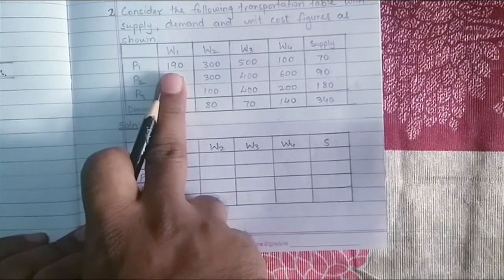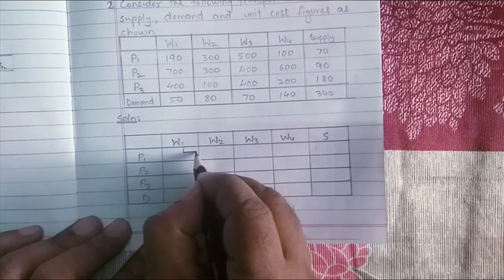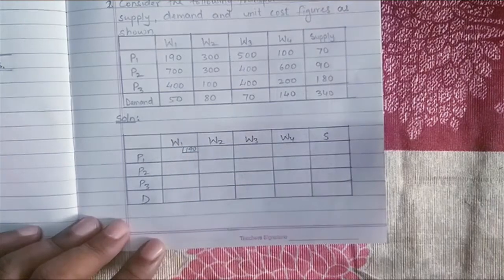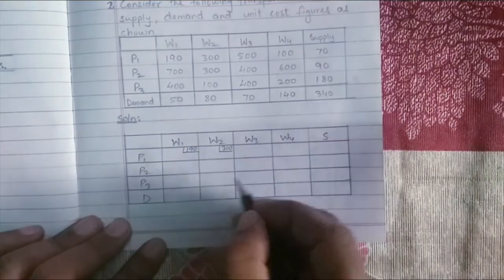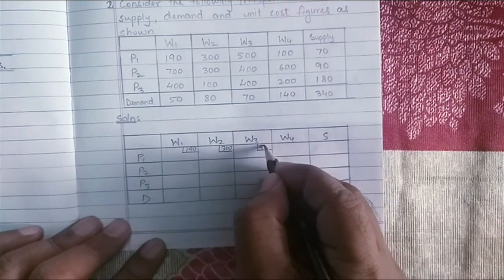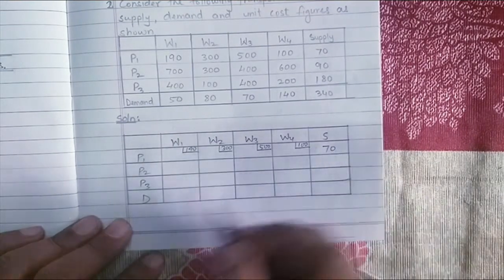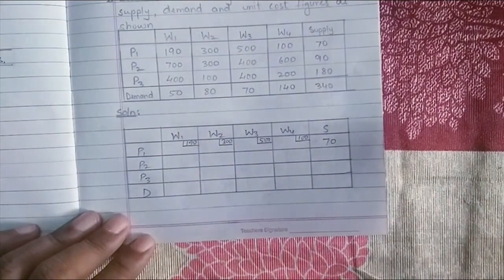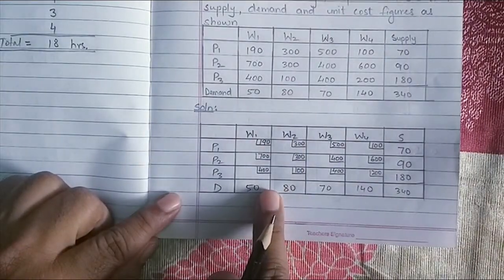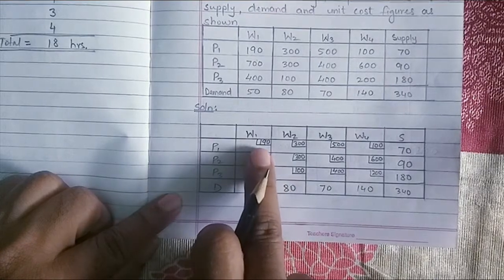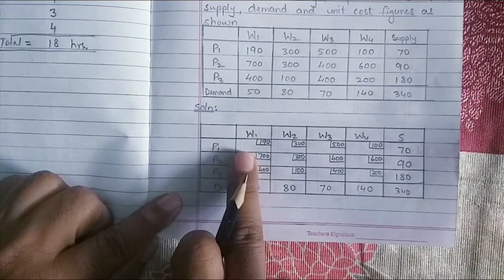The unit cost for each of the cell I am going to put it here on the topmost corner: 190, 300, 500, 100 here. Supply I will put 70 here. I have rewritten this matrix down below. If you can see the changes, I have just put the cost in the corner here so that I can write the allocated units here.